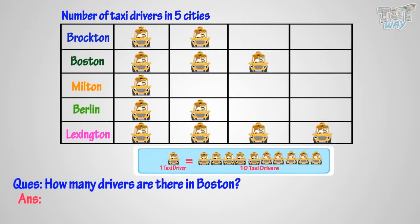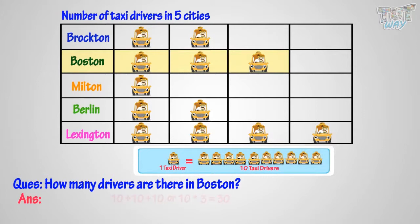Question 1: How many drivers are there in Boston? There are three driver symbols against Boston, where one symbol means ten drivers. So, ten plus ten plus ten, or ten times three, equals thirty. There are thirty drivers in Boston.